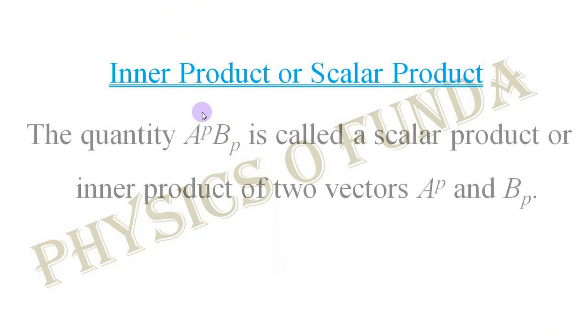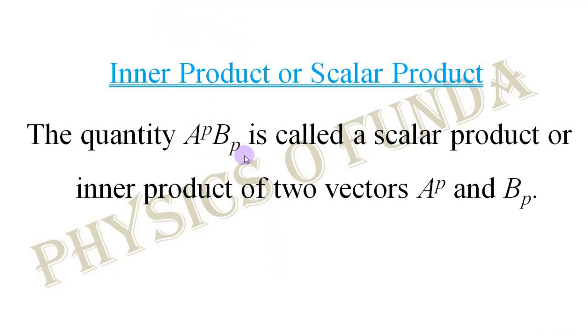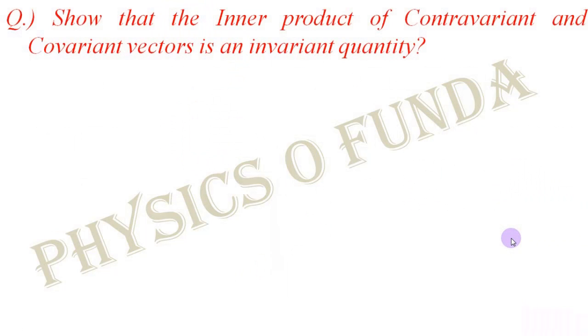First, we have to see the definition of inner product or scalar product. The quantity A^p B_p is called the scalar product or inner product of two vectors A^p and B_p. This is the mathematical definition, where A^p represents a contravariant vector and B_p represents a covariant vector.